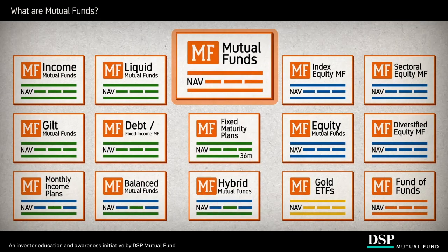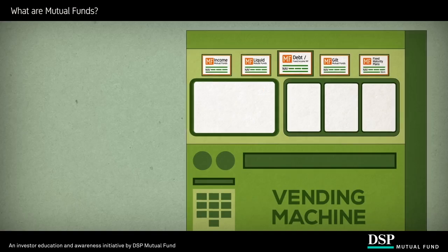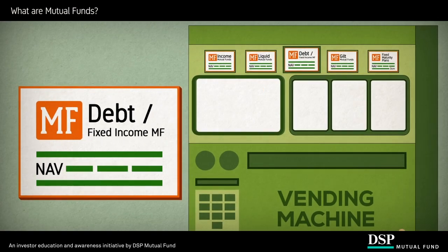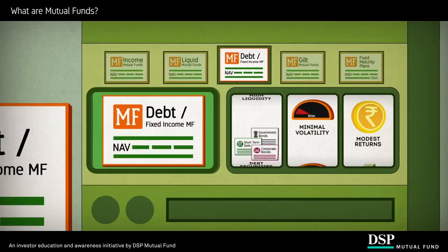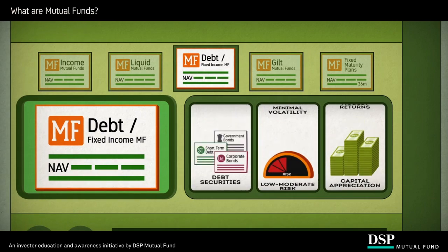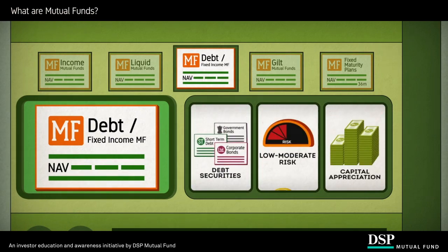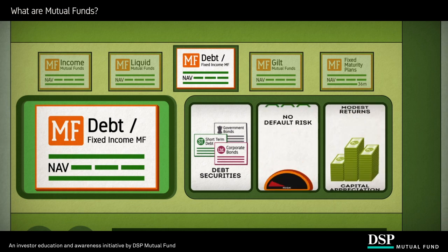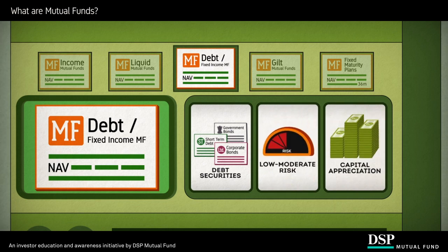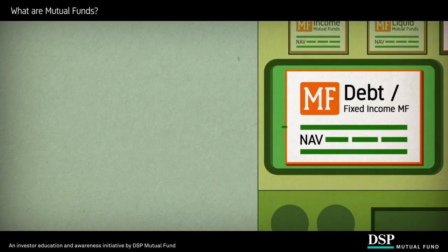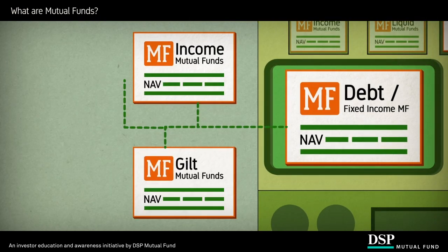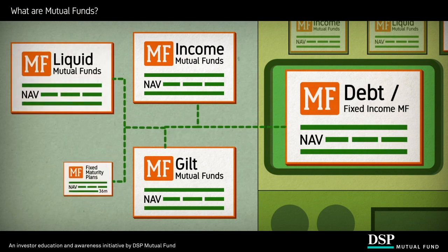There are many types of mutual funds suitable for different investors with differing needs and risk profiles. Let us start by understanding debt or fixed income funds. These funds primarily invest in debt securities such as bonds, debentures, and government securities. They are considered to be less risky and can provide modest returns.